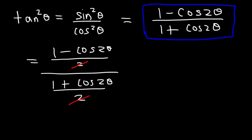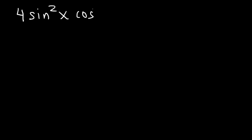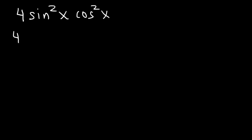Make sure you write all three formulas we just went over. Now consider the expression 4 sine squared x cosine squared x. How can we use the power reducing formula to simplify this — rewriting the expression so that all exponents of sine and cosine equal 1? The power reducing formula of sine squared x is 1 minus cosine 2x divided by 2.